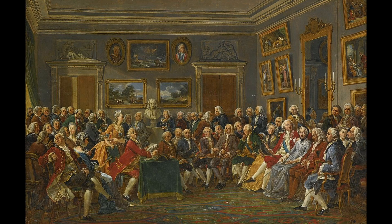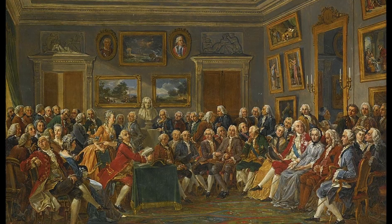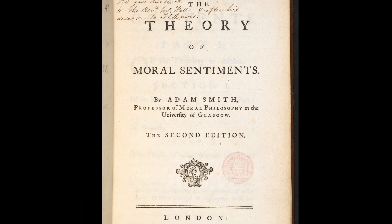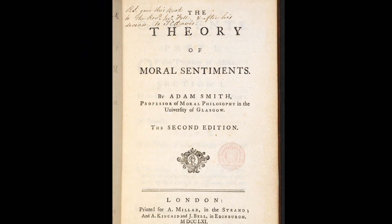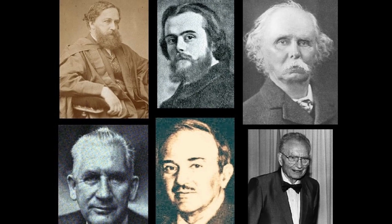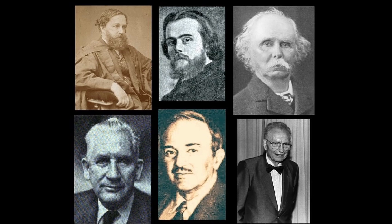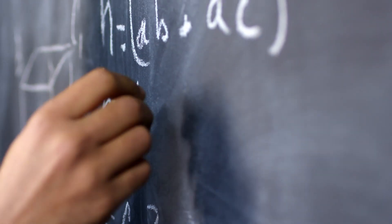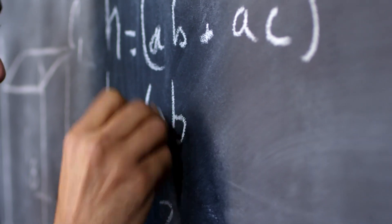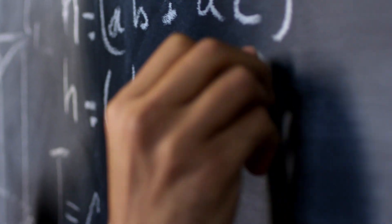When people first began to study economics in the 18th century, men such as Adam Smith linked economic behaviour with psychological explanations. As economics developed, economists sought to frame it as a natural science subject to rules, and the idea of people as rational agents took hold.